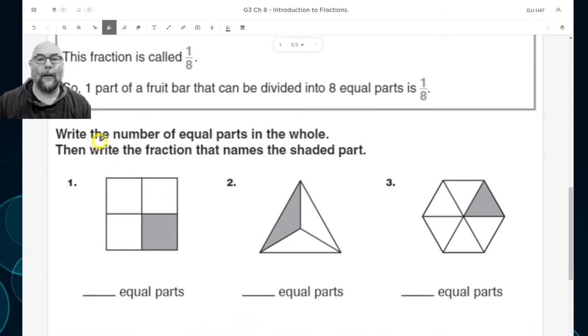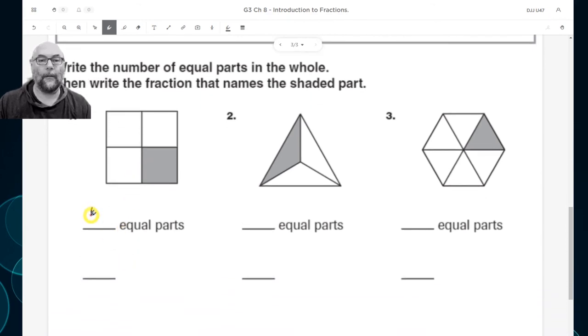Write the number of equal parts in the whole. Then write the fraction that names the shaded part. The number of equal parts. So there's one, two, three, four equal parts. I'm going to write my four here. And then the fraction that names the shaded part. So a fraction, so there's one that's shaded. And there's four. One, two, three, four, all together. So the answer is one-fourth.